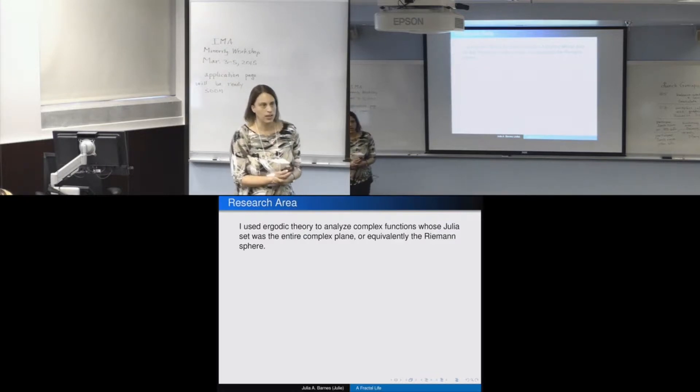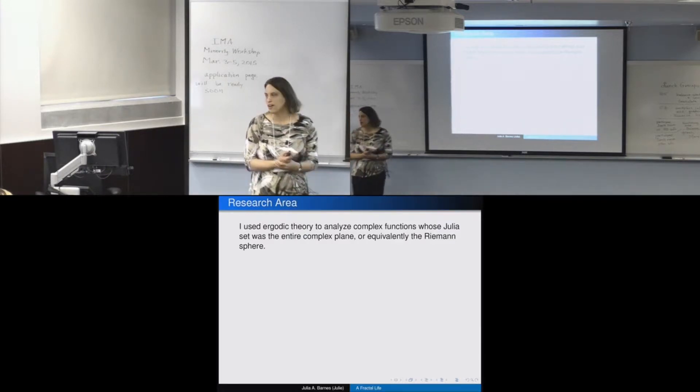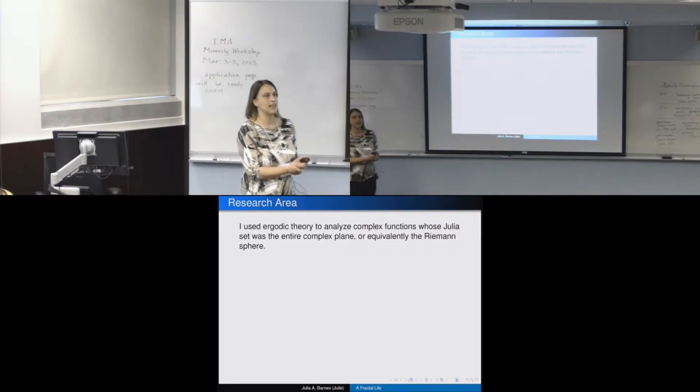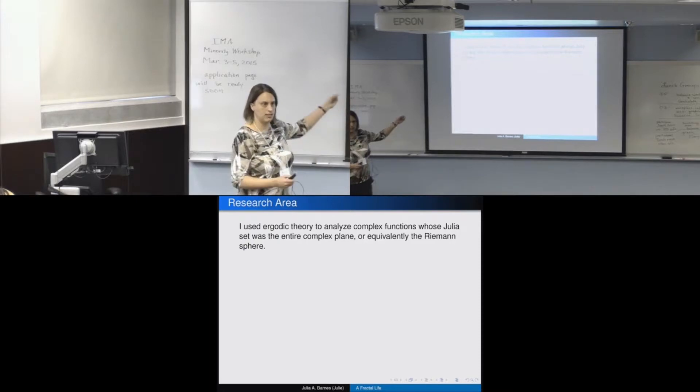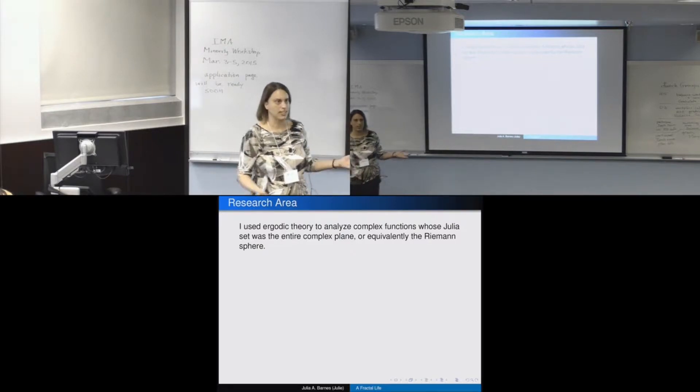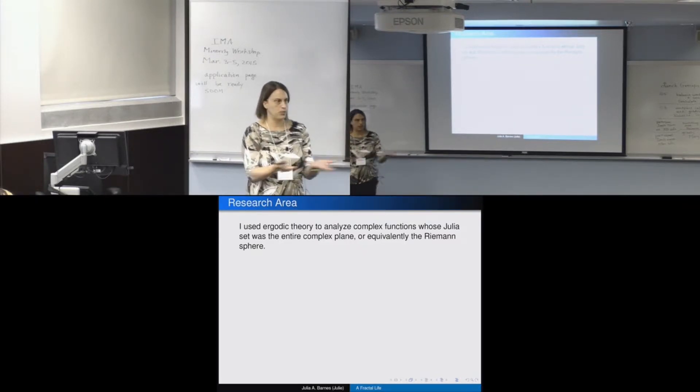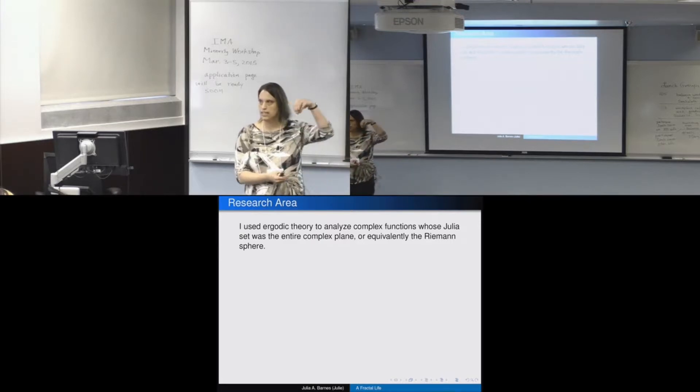So when I was in graduate school, I was using ergodic theory to talk about how chaotic Julia sets were when they were the entire domain. So not just the edge of these lacy pictures. My Julia sets actually were boring looking because they would be the entire domain, literally. But you could think of it as the complex plane or the Riemann sphere where you do a one-to-one correspondence between everything on the plane and the sphere. And then you put infinity at the North Pole.